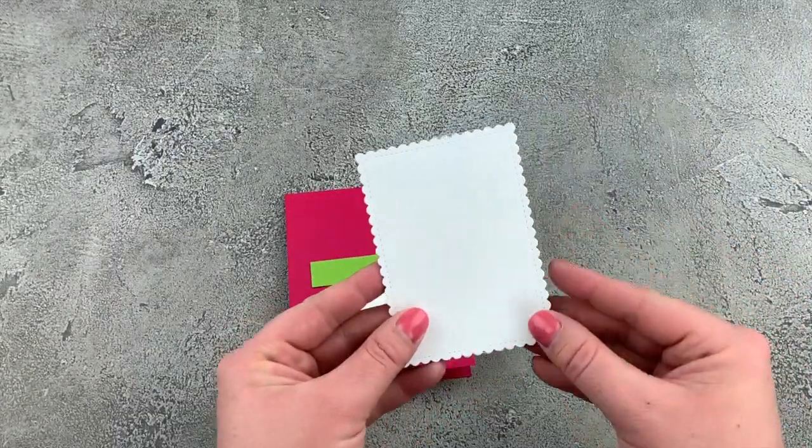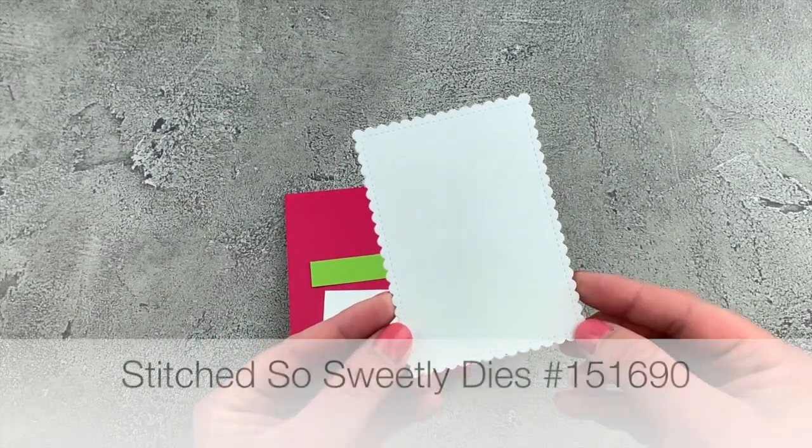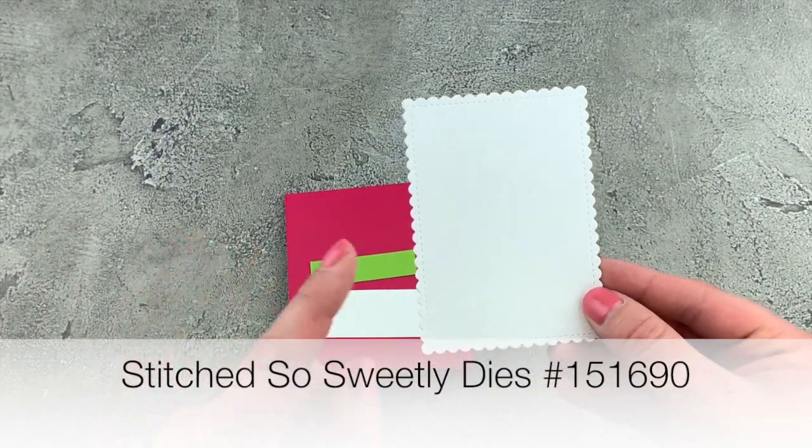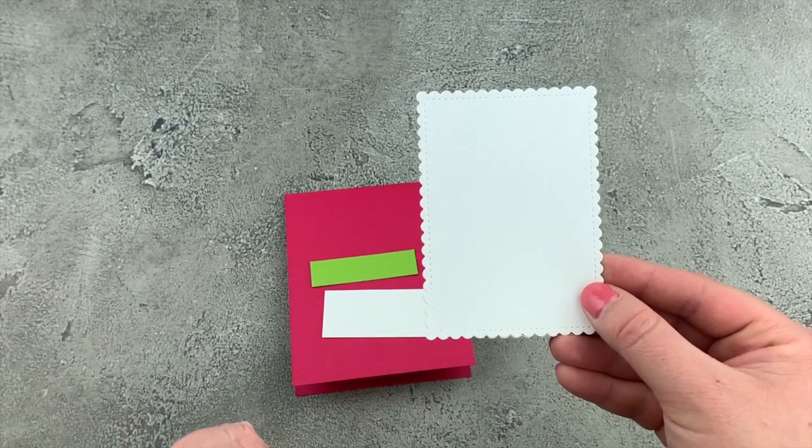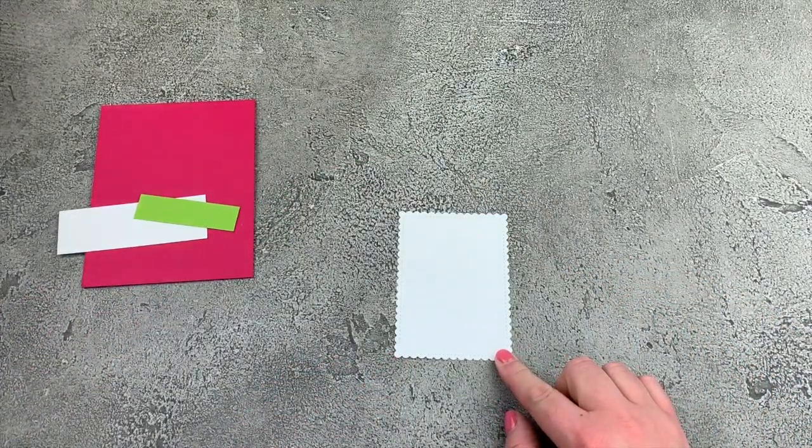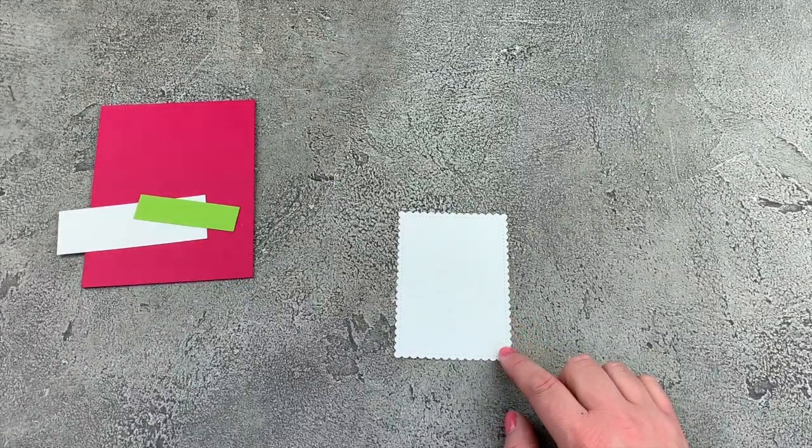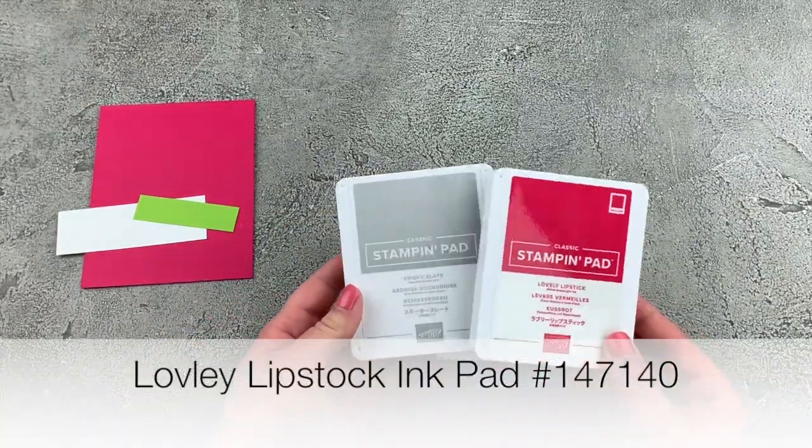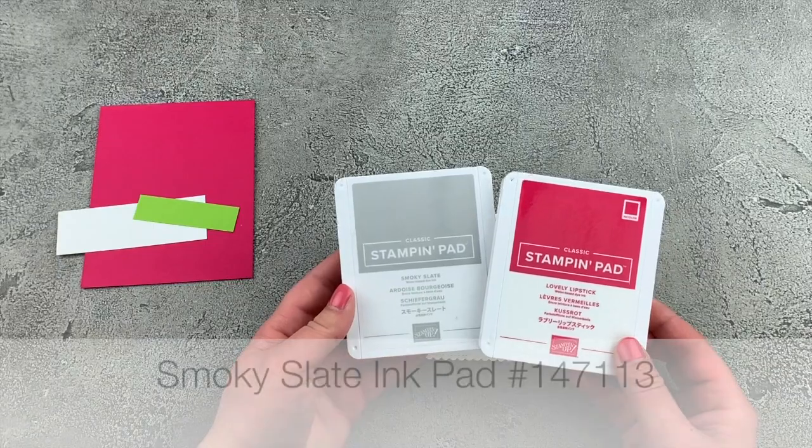And then I already die cut this with the Stitched So Sweetly dies. So if you haven't checked out this set of dies, make sure you do that. For our first step, we're going to do some stamping on our piece that we've die cut. So I'm using Lovely Lipstick and Smoky Slate ink pads.